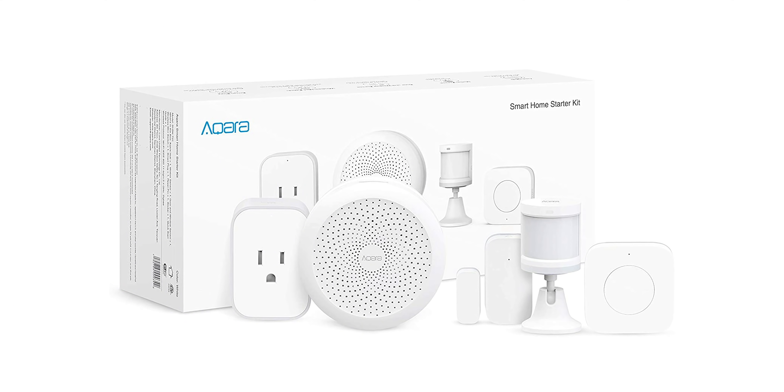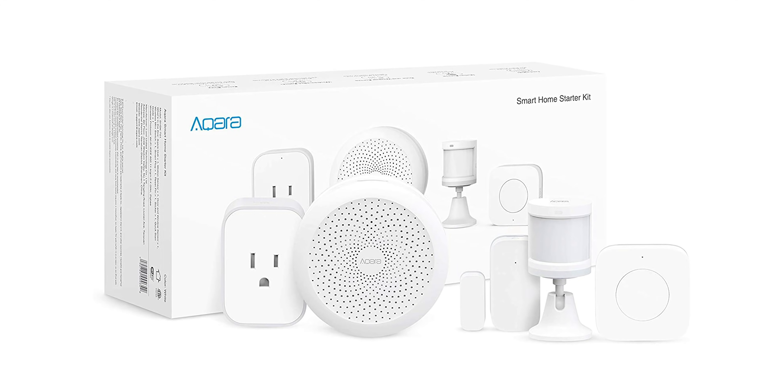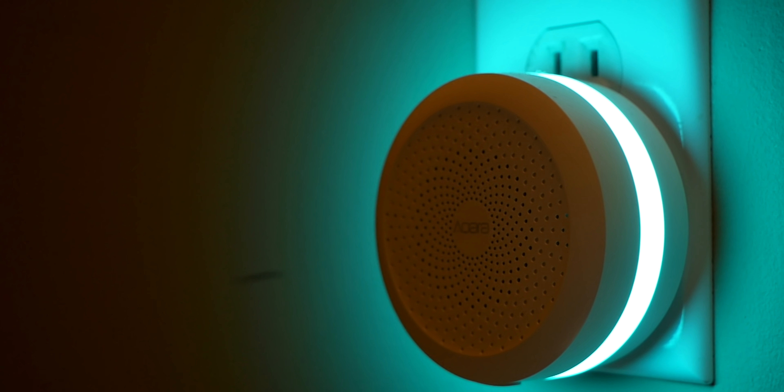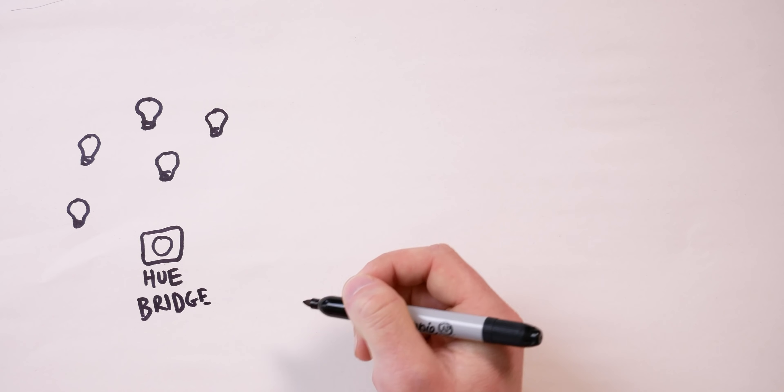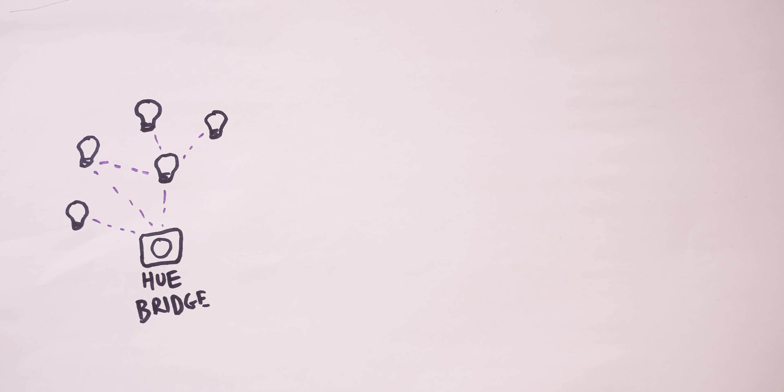For example, Philips Hue products and Aqara products all use Zigbee. These products are usually pretty fast and reliable, but they all require their own bridge or hub to connect to HomeKit. If you want Philips Hue bulbs, you need the Philips bridge; if you want Aqara sensors, you need the Aqara hub. Thread devices actually act much like Zigbee products — they are low power and can create a mesh network — with one big difference: Thread devices don't require that additional hub.